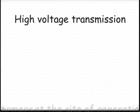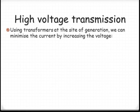We generate the voltage, the current, the power at the site. But then using transformers, we minimize the current. We increase the voltage. So this is our starting point. If they're equal, if we increase the voltage, the current must decrease. So this is transformers again.